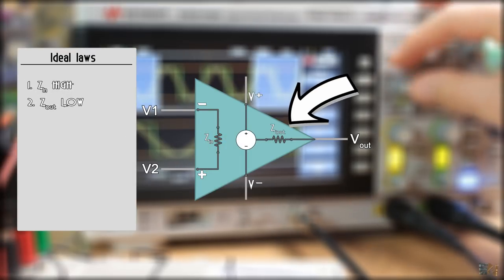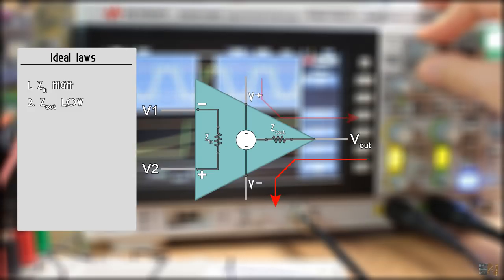Second spec is that the output impedance is low and current could flow inwards and outwards to the main supply.